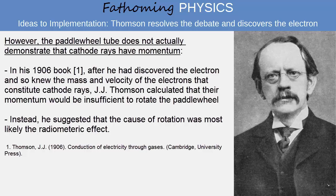However, later in 1906, after he had discovered the electron, and so knew the mass and velocity of electrons in cathode ray tubes, J.J. Thomson calculated that the electron's momentum would be insufficient to rotate the paddle wheel. Instead, he suggested that the cause of rotation was most likely the radiometric effect.